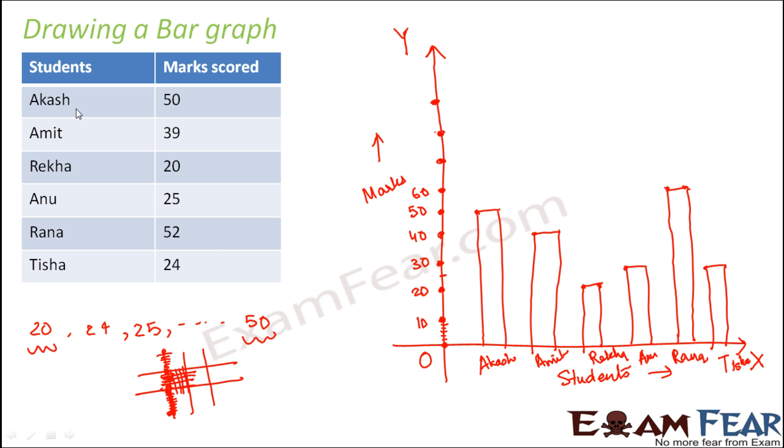Now let's forget about the table. Just looking at this graph itself, you can tell the scores of each student. In fact, just by looking at the height of the bars, you can tell who scored the maximum and minimum. The most important thing while drawing a bar graph is to choose the scale. In this case, we chose the scale such that one unit represents 10 marks. One unit is the bigger square.